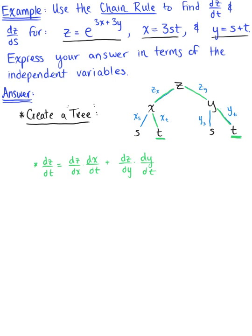In addition to this, we also want to find the derivative of z with respect to the other arbitrary parameter s. From the tree, that gives us dz/dx multiplied by dx/ds, plus dz/dy multiplied by dy/ds. These are the two chain rule formulas we're going to need, and writing them out like this shows us all of the partial derivatives we need to compute.